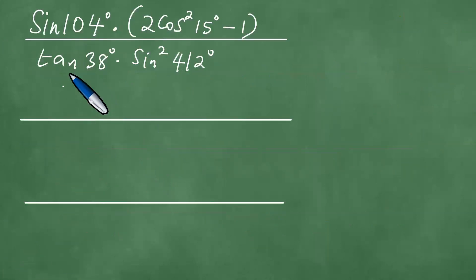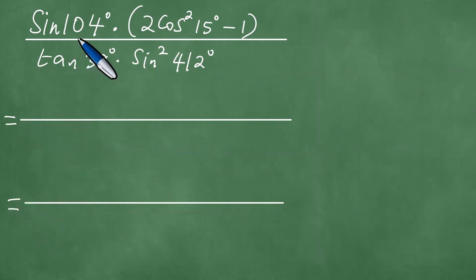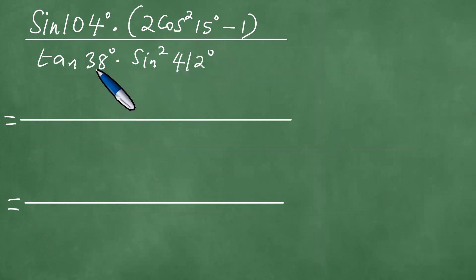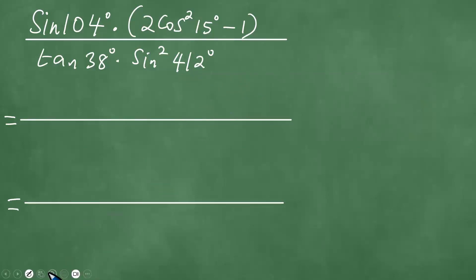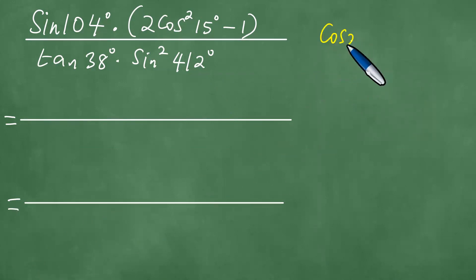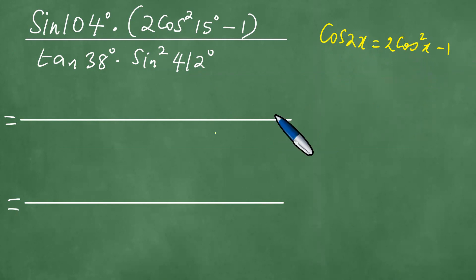Next question. We have the sine of 104 degrees, and then 2 times cosine squared of 15 degrees minus 1, all over the tangent of 38 degrees. And there's also a sine squared of 412 degrees. There's a giveaway here — we need to remember the identity that cosine 2x equals 2 cosine squared x minus 1.